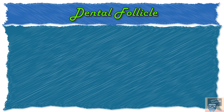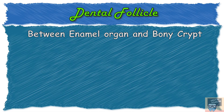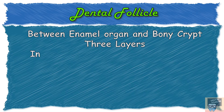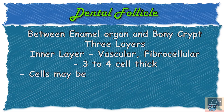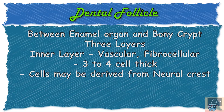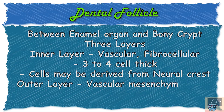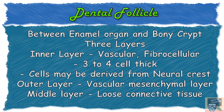The dental follicle or dental sac is present between the enamel organ and the bony crypt, surrounding the enamel organ like a sac. It has three layers: an inner layer that is vascular, fibrocellular, three to four cells thick, and derived from neural crest; an outer vascular mesenchymal layer; and a middle loose connective tissue layer, which is the least vascular of the three.